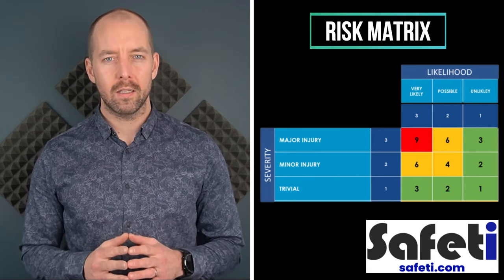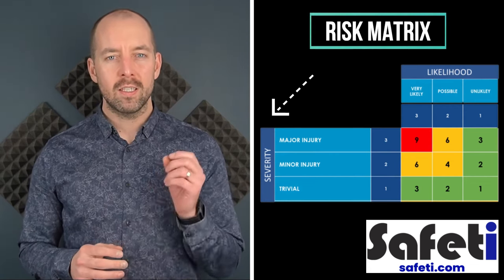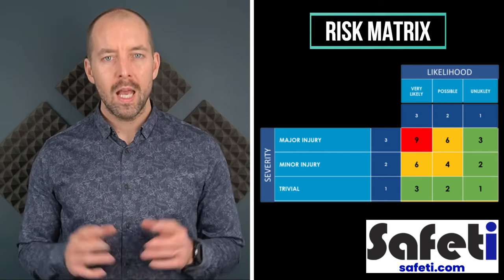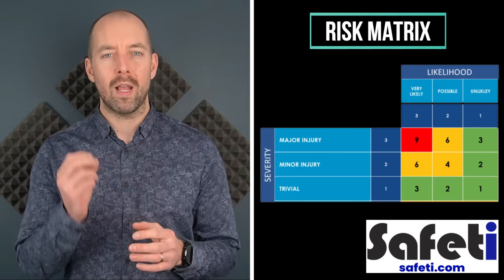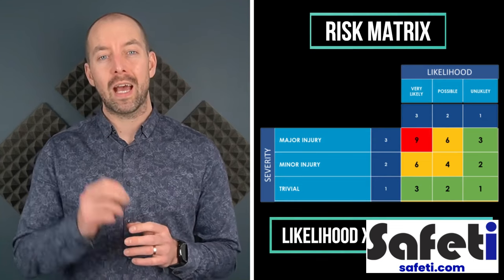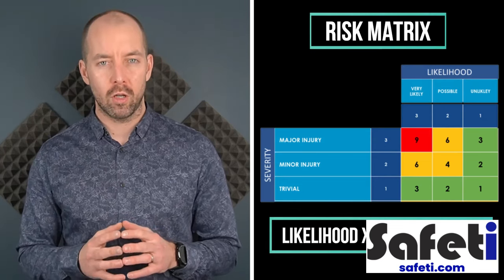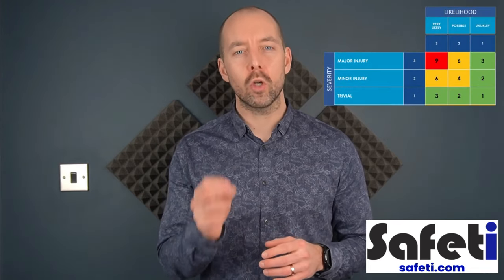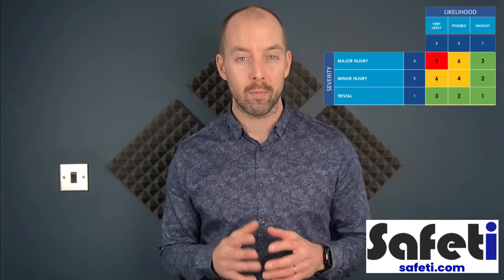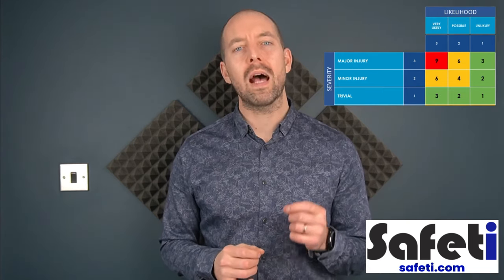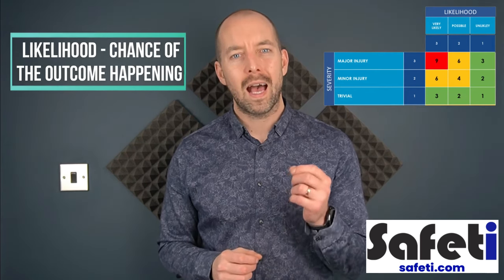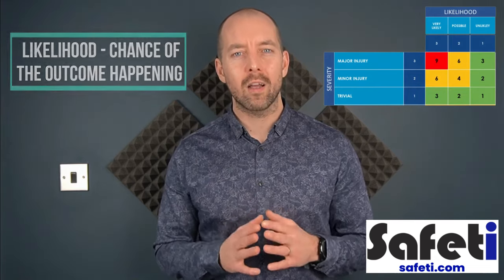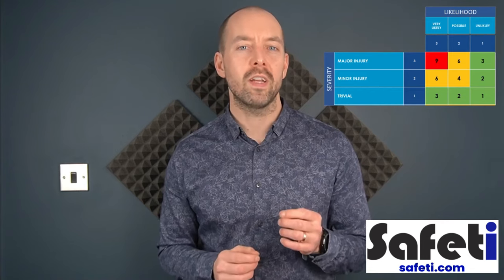You're about to see an example of a risk matrix. On one axis you have severity and on the other axis you have likelihood, and these two components are multiplied together to give you a risk score. Once you assign a value to each — likelihood and severity — and multiply them together, you'll have a result that represents the significance of the risk. The number chosen represents the level of significance: high, medium, or low. Likelihood asks what are the chances of that outcome actually happening, and severity asks how bad the outcome likely would be.